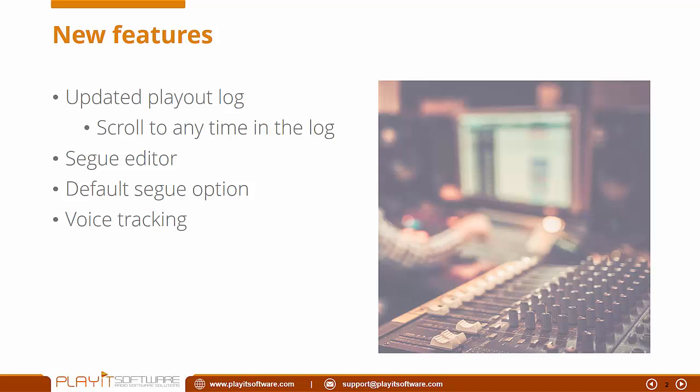I've also added the segue editor so if you've got two tracks that are playing together you can now go and edit the segue and fine-tune how those tracks are played together. A frequently requested feature is the default segue option — when you drag a new track into PlayIt Live you'll be able to choose what the default segue option is. Previously it was 'move next' so it would automatically play into the next track, but you can now change that to 'stop' which means it will stop playing after the track you've dropped in.